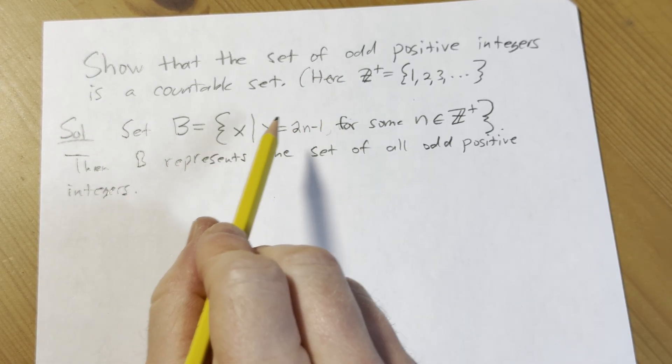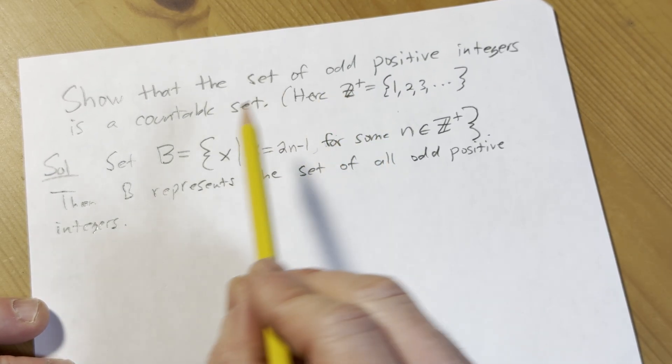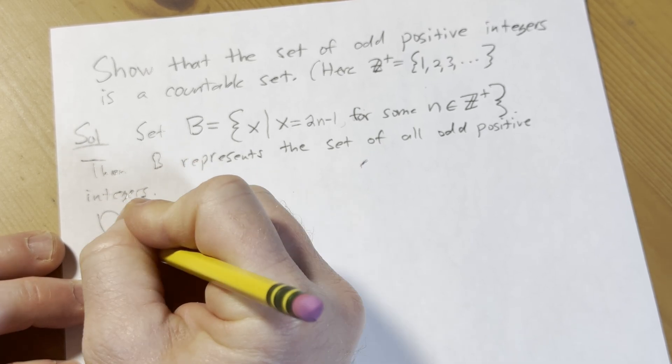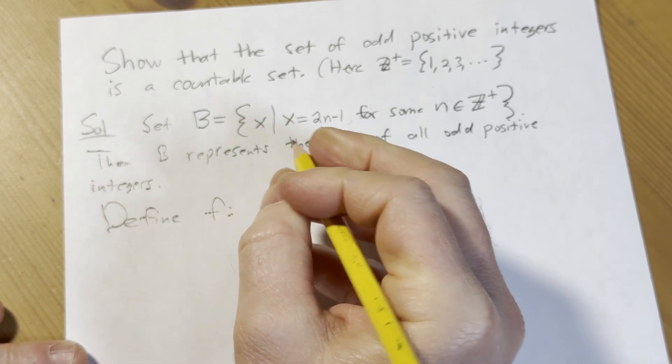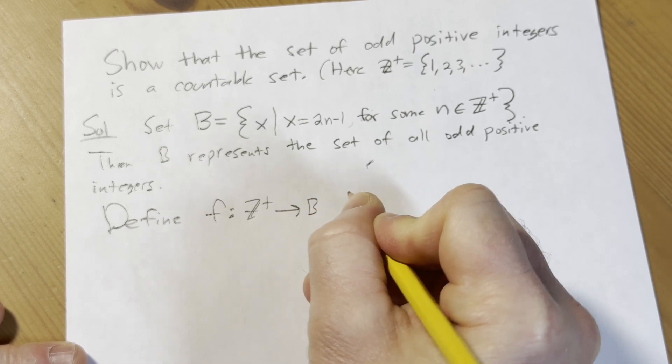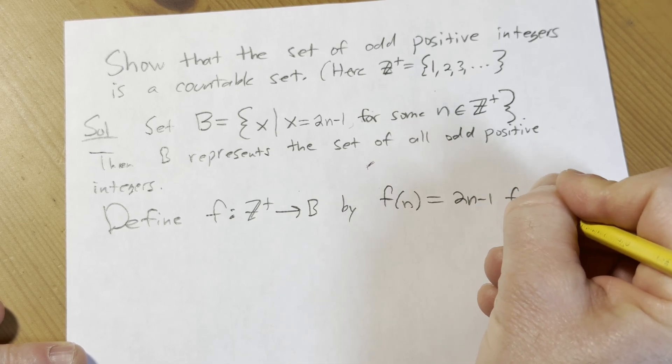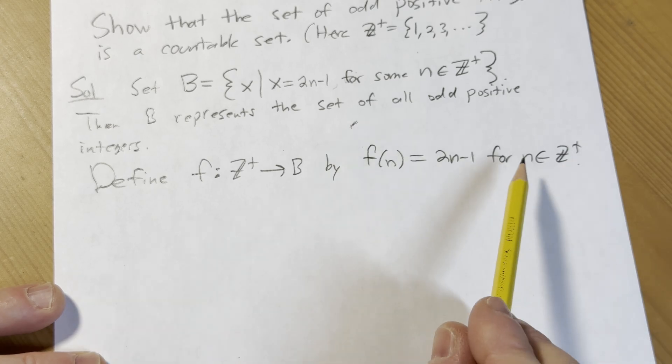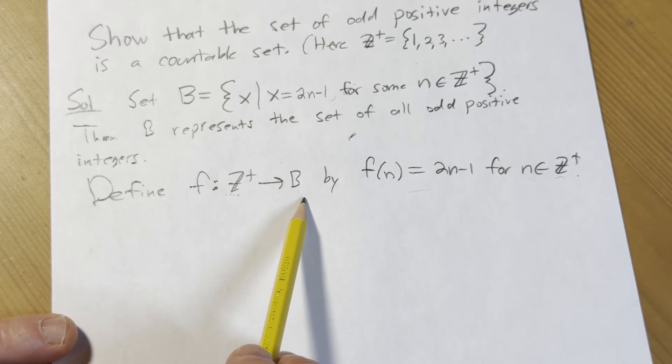And what we have to do now, in order to show it's countable, is we have to show that there's a bijection or a one-to-one correspondence between the positive integers and B. So we have to define a function that is going to be a one-to-one correspondence. So define f and we're going to go from Z plus into B by f of n equals 2n minus 1 for n in Z plus. So for each n in Z plus, we have this function which is defined from the set of positive integers into the set of all odd positive integers.